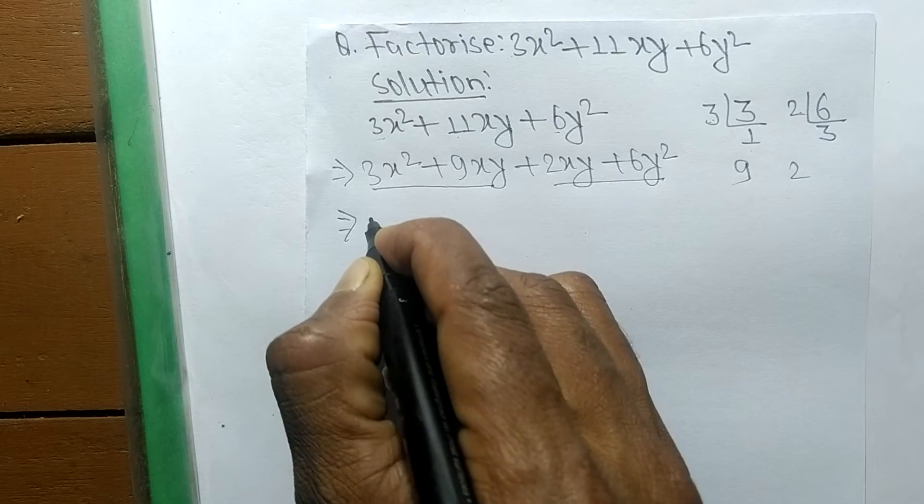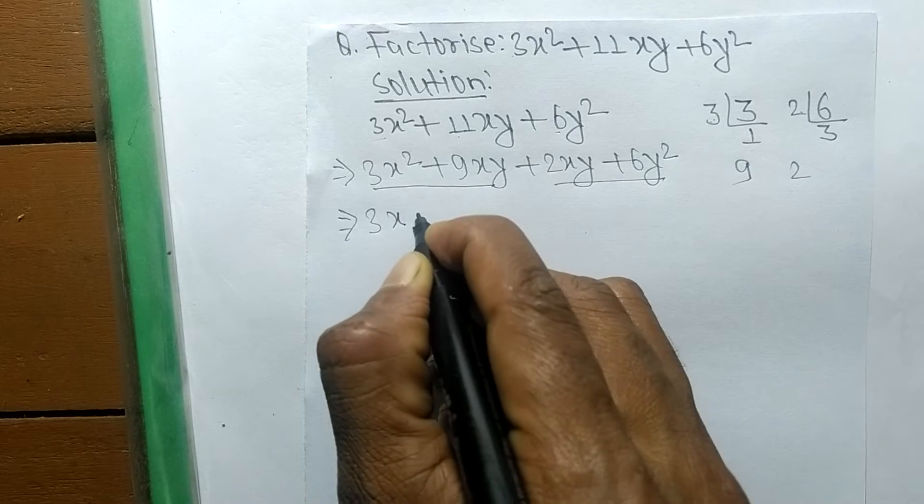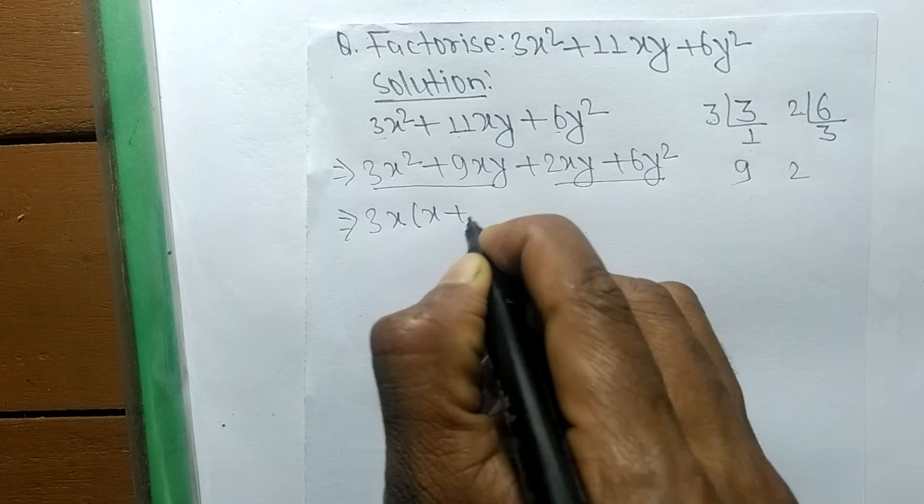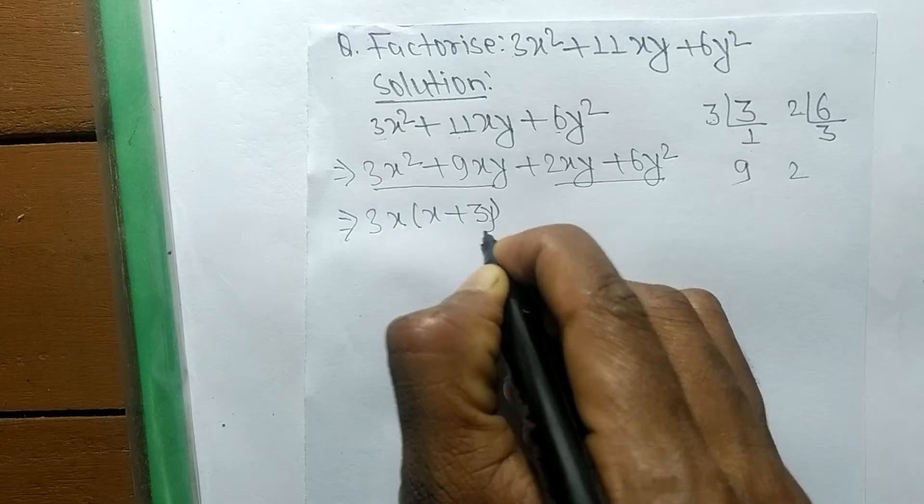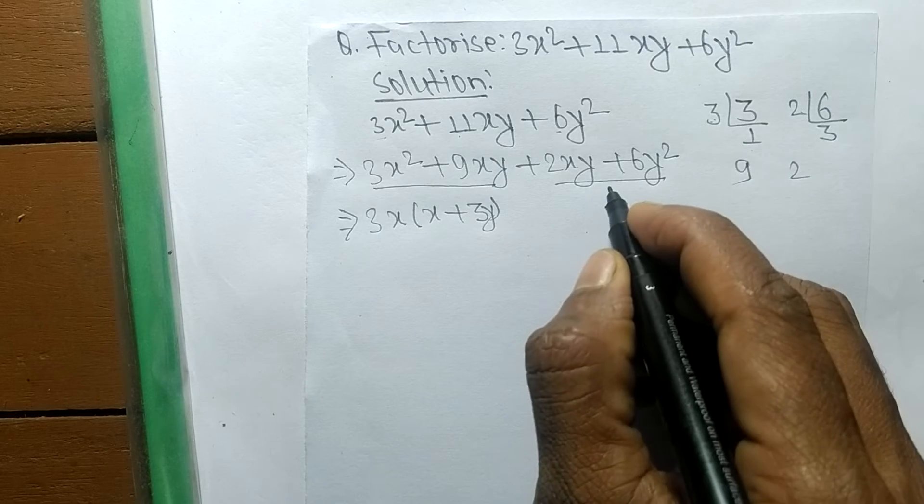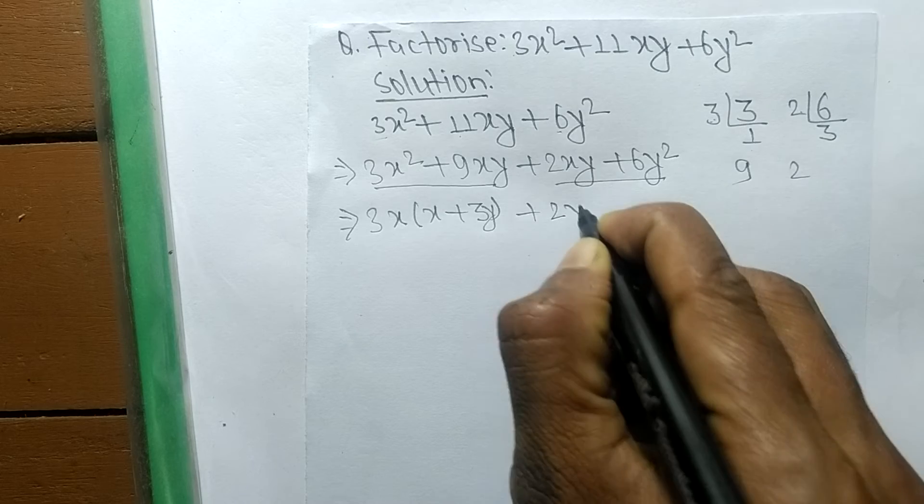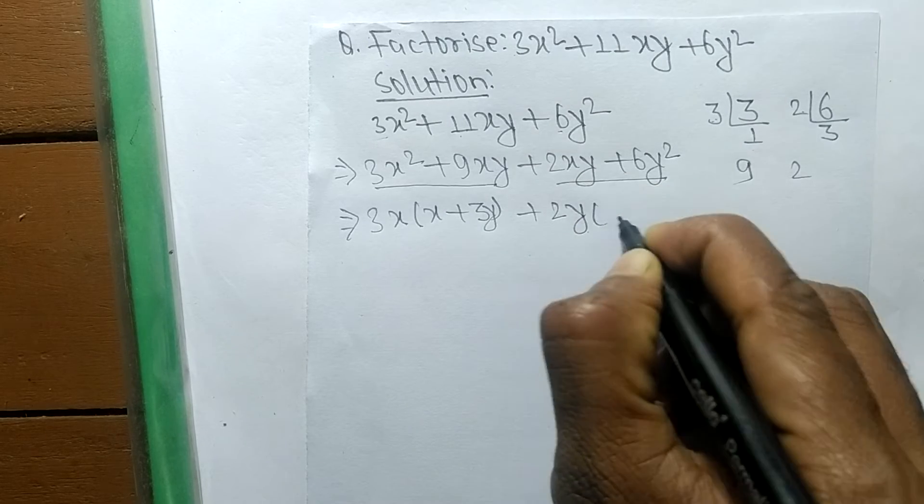In the first pair, the common part is 3x. The remaining is x + 3y. In the second pair, the common part is 2y, and the remaining is x + 3y.